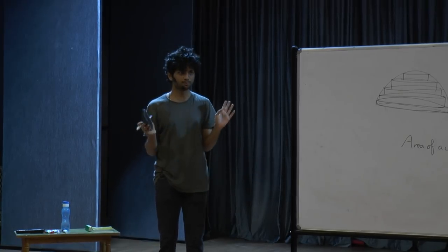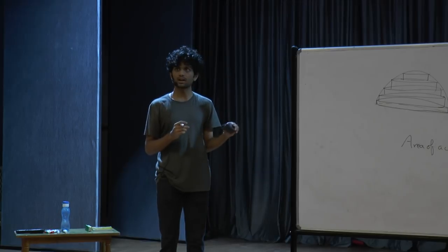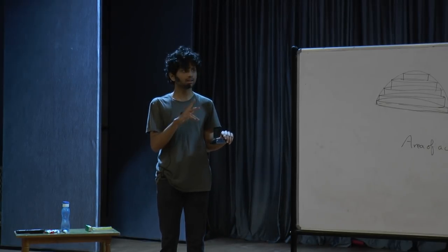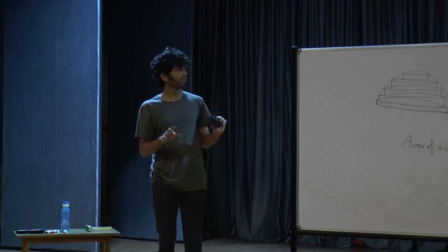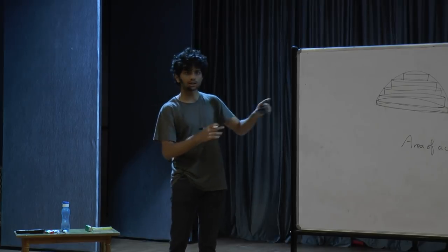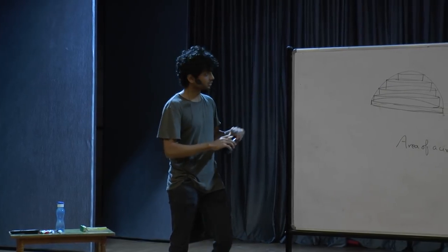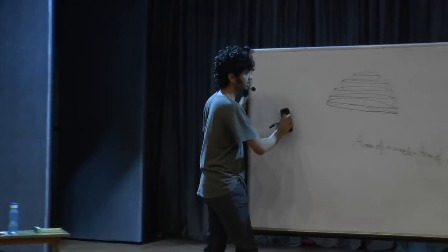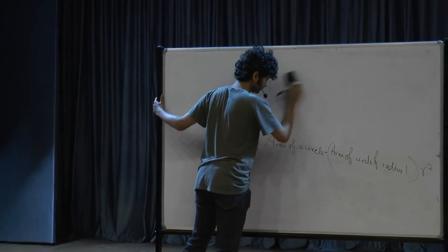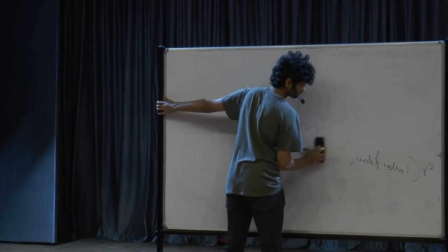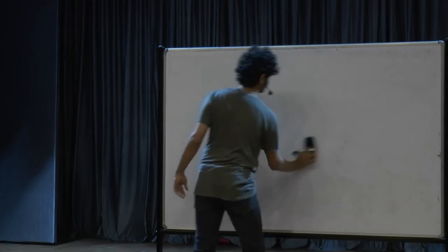I'll quickly outline the homework inspired by this second method. Use the same approach — taking a sphere of radius one and a slightly bigger sphere of radius one plus h — to derive a relation between the area of a sphere of radius one and the volume of a sphere of radius one. In the two-dimensional case, the relation was circumference equals twice the area. What would you guess for three dimensions?